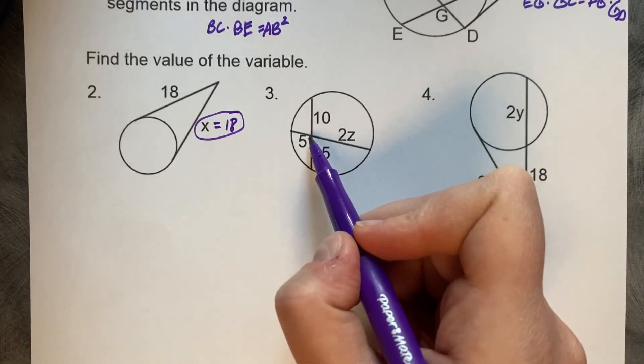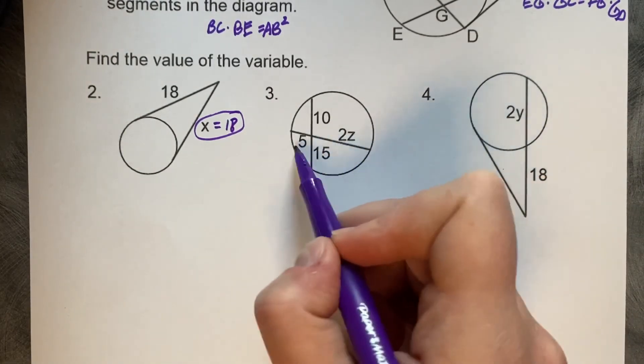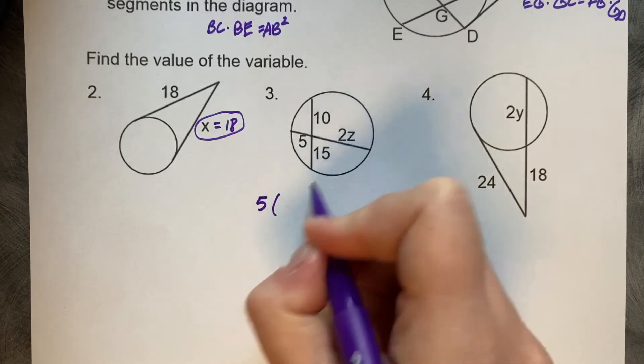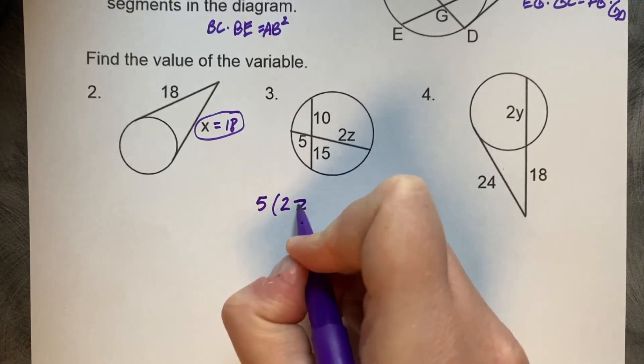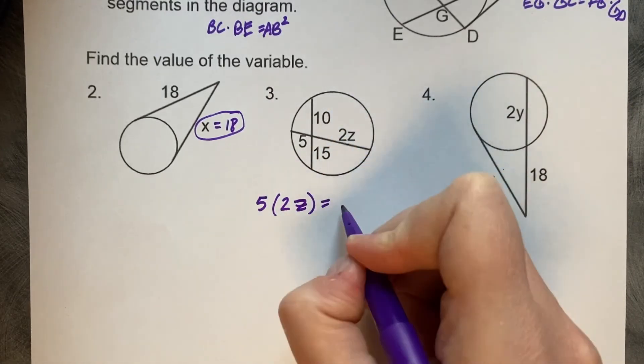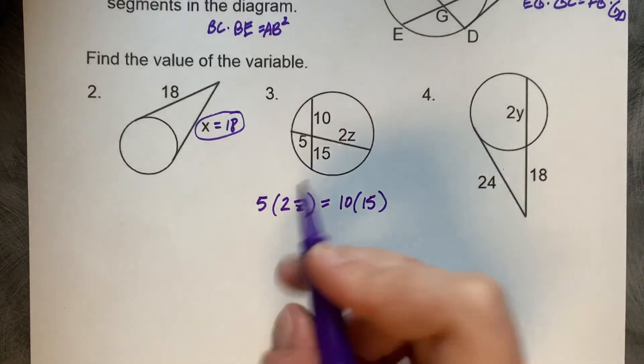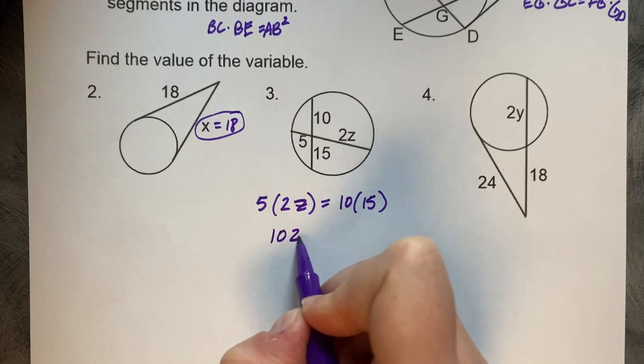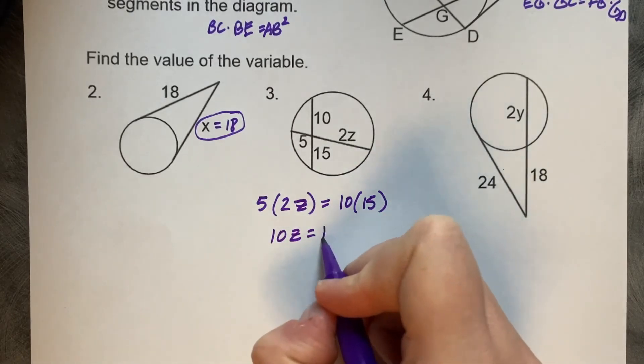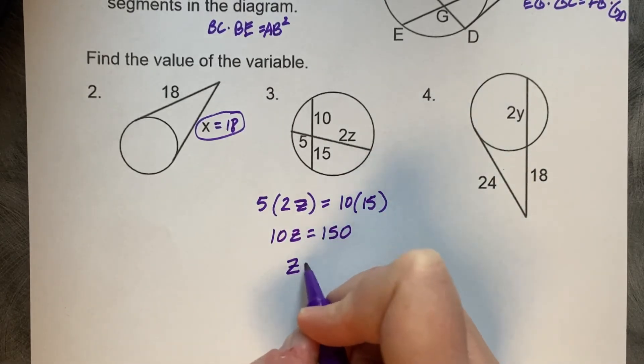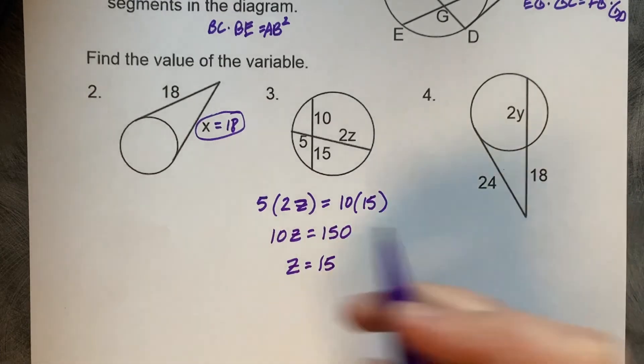Three, an intersection is on the inside. So we're going to multiply the segments together. So five times 2Z equals 10 times 15. And then we can solve for Z. So five times two is 10Z, 10 times 15 is 150 divided by 10, and Z equals 15.